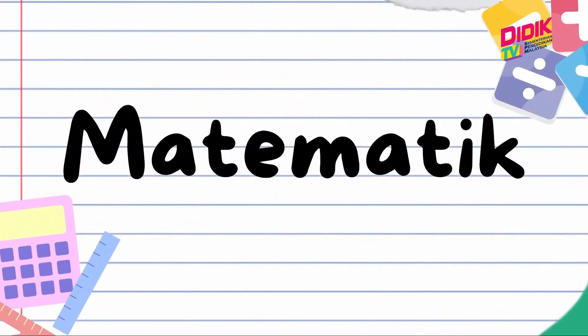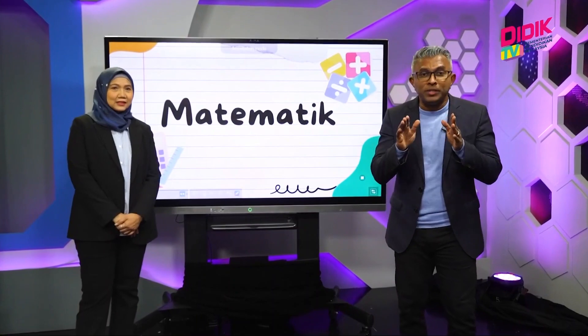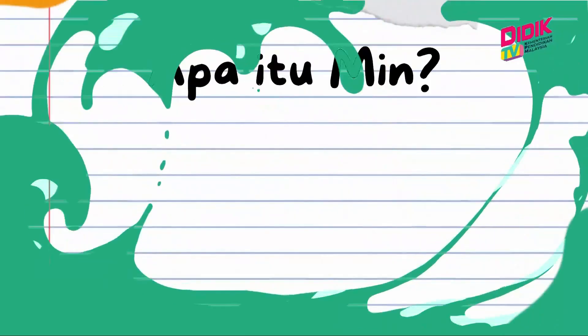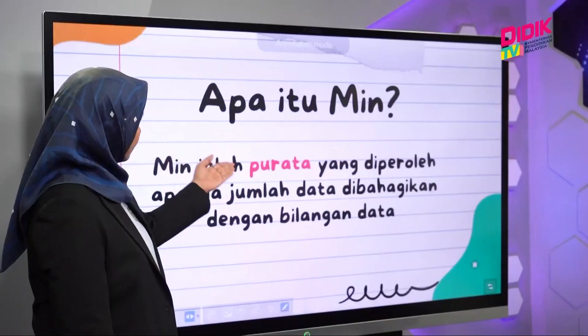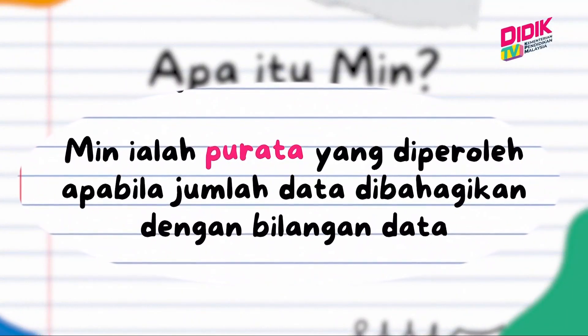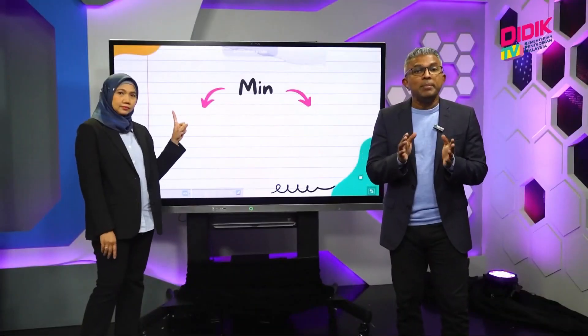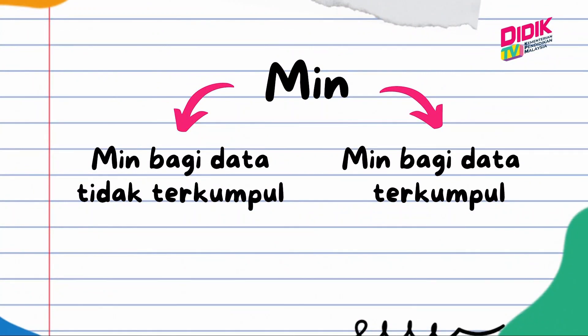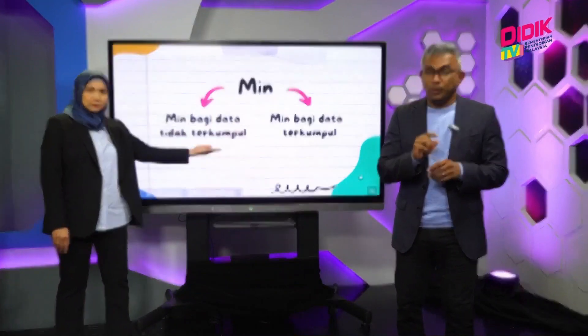Ramai yang takut dengan mata pelajaran ini. Sebenarnya, jika anda nak mendapat keputusan yang cemerlang dalam matematik, adik-adik perlu memahami konsep dan menguasai rumus. Antara rumus yang paling penting untuk anda kuasai ialah mencari nilai min. Apa itu min? Min ialah purata yang diperoleh apabila jumlah data dibahagikan dengan bilangan data. Ada dua jenis min, iaitu min bagi data tidak terkumpul dan min bagi data terkumpul. Hari ini, kita cuba memahami cara untuk menghitung min bagi data tidak terkumpul.